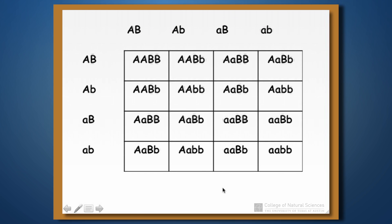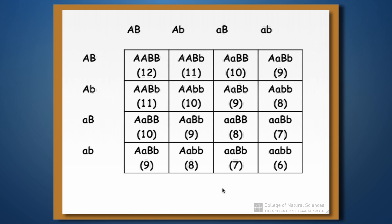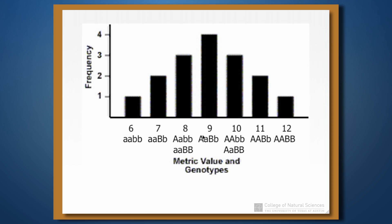Here's a Punnett square for two loci showing all possible genotypes in the population. You can confirm these at your leisure. The individual with all uppercase alleles will be size 12, and those with all lowercase will be size six. There are two ways to get individuals of 11 centimeters, three ways to get 10 centimeters, four ways to get nine centimeters, three ways to get eight, and two ways to get seven. We can show a frequency distribution of these genotypes, which is still falling into discrete groups but is beginning to look more like a continuous distribution.